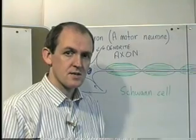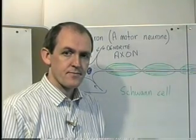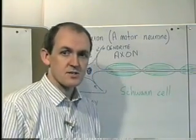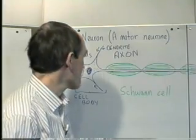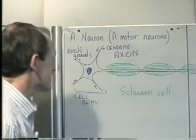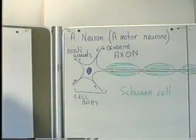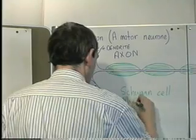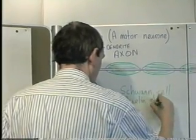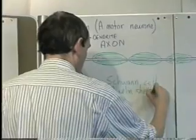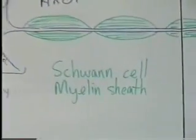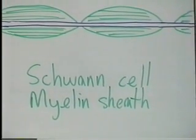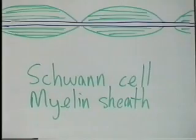So it's very important that we have these Schwann cells surrounding the axon: insulation, protection, and nourishment. These cells comprise a sheath called the myelin sheath. The myelin sheath surrounds the axon and is made up of Schwann cells.